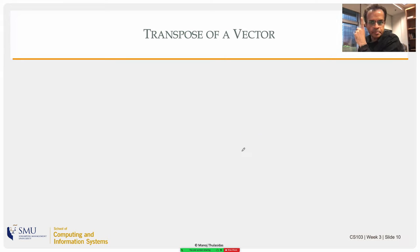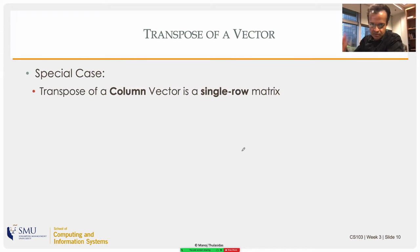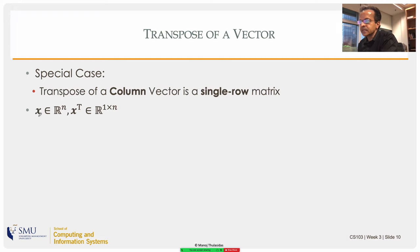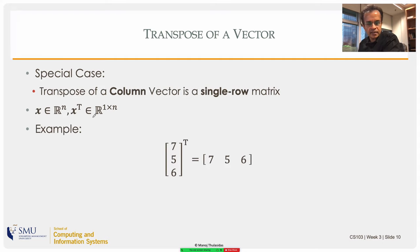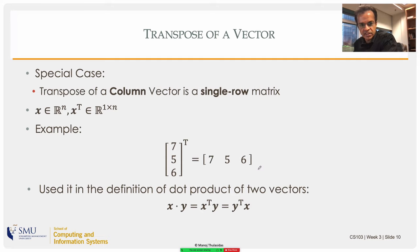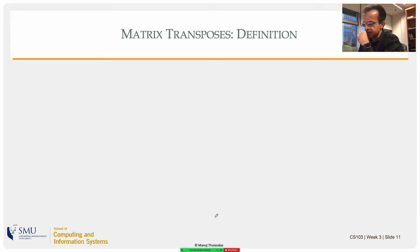There's a special case: if you have a column vector, a single-column matrix, and take the transpose, it becomes a single row matrix because columns become rows. So if x is a member of R^n, x transpose becomes a member of R^(1×n) — one row and n columns — a row matrix, sometimes called a row vector. We used this in the definition of dot product, where x dot y equals x transpose times y, or y transpose times x.